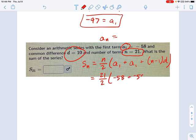So we have negative 58 plus, negative 58 plus, n minus 1, that's 20, times d, which is 10. Okay? And now we just add it all up. So that's 21 over 2. Well, what is that? Negative 58. What is that? Negative 116 plus 200. Okay.